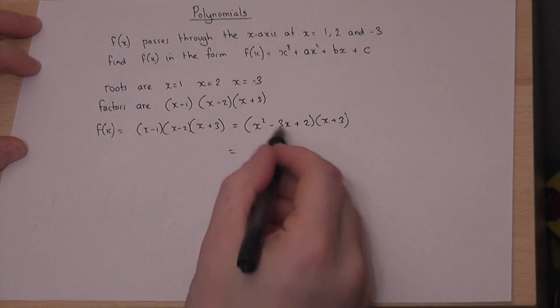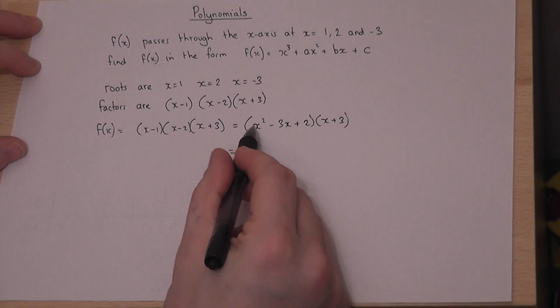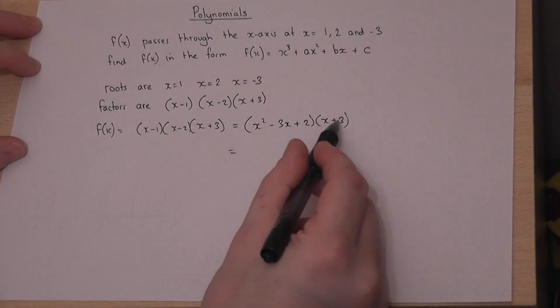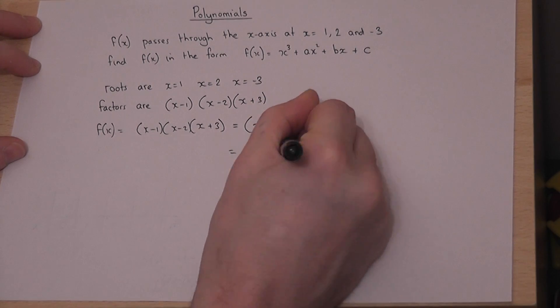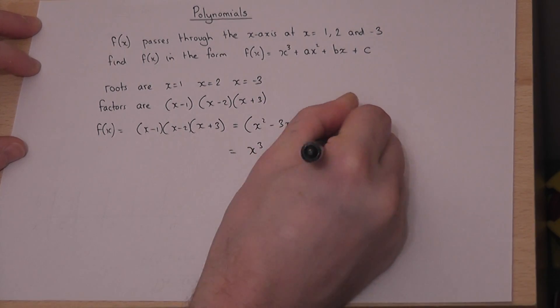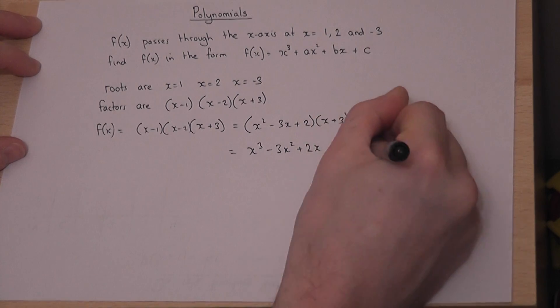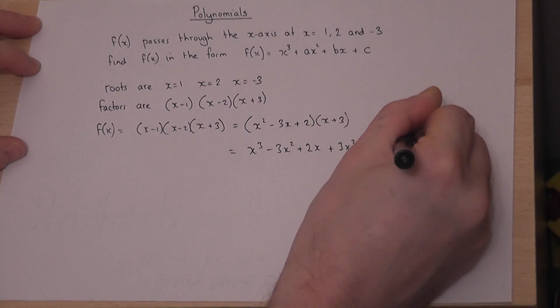Then finish off by doing the full expansion. I'll times all three things by x, then all three things by 3. So, x³ - 3x² + 2x + 3x² - 9x + 6.